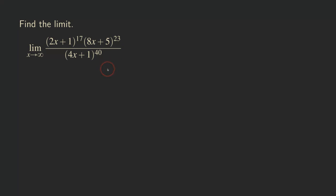So how do we evaluate this kind of limit? Because x is approaching infinity, the strategy we use is the usual strategy for evaluating limits at infinity: we are going to factor out the highest power from both the numerator and the denominator. Let's get started.